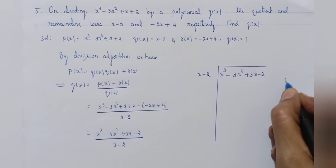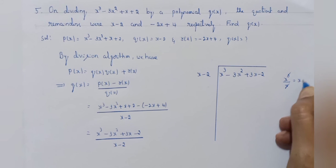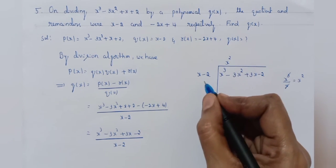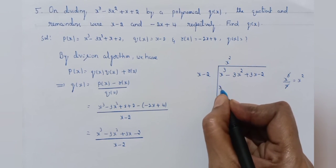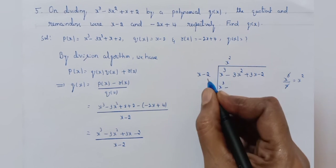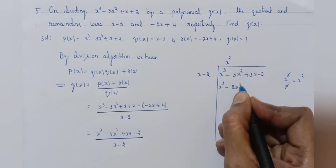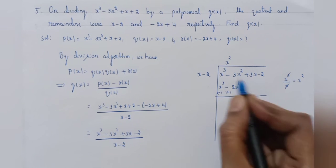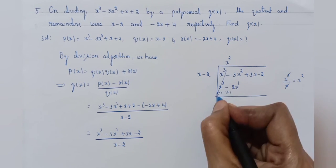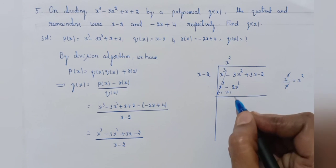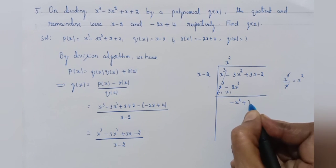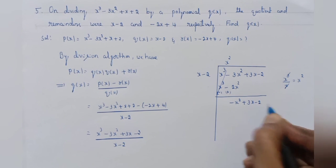Now divide x cube minus 3x square plus 3x minus 2 by x minus 2. Divide x cube by x — cancel x, you will get x square. Write x square in the quotient. Multiply x minus 2 by x square: x into x square is x cube, minus 2 into x square is minus 2x square. Change the signs. Plus x cube minus x cube get cancelled. Minus 3x square plus 2x square is minus x square plus 3x minus 2.